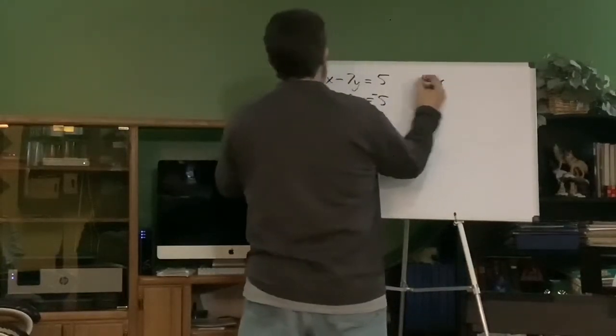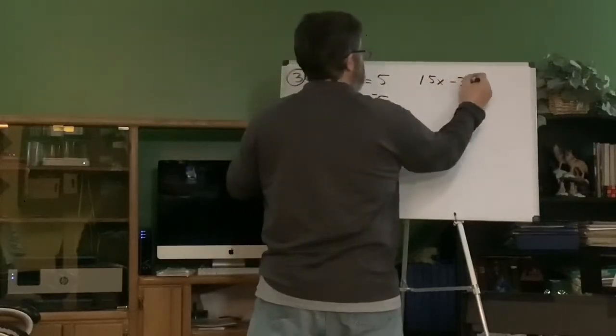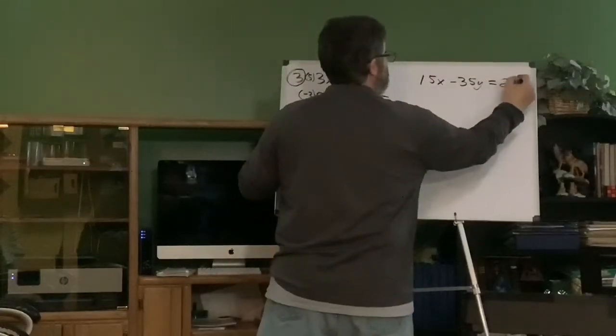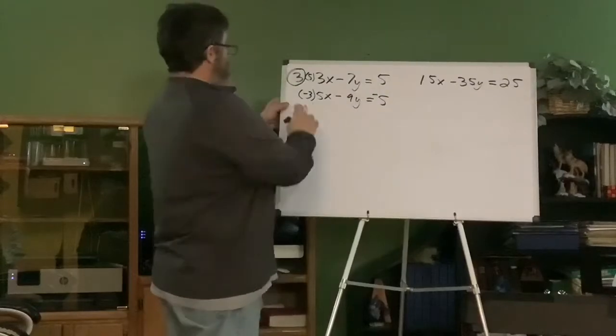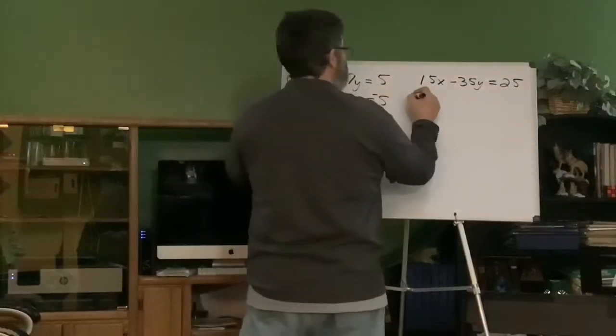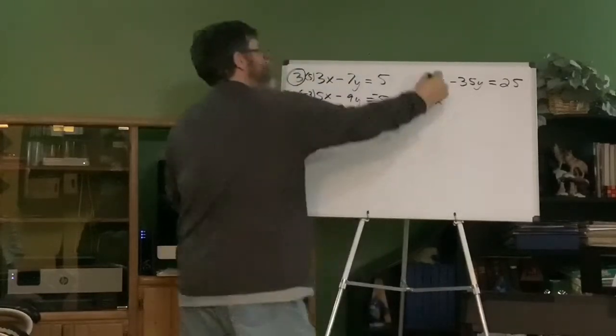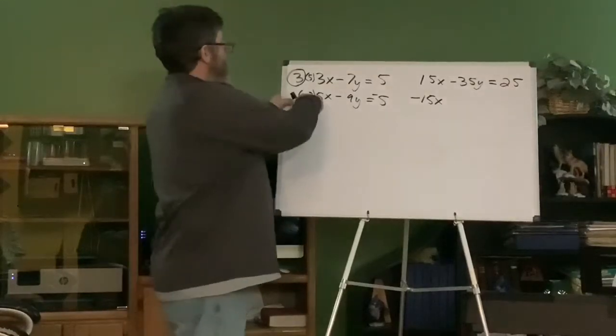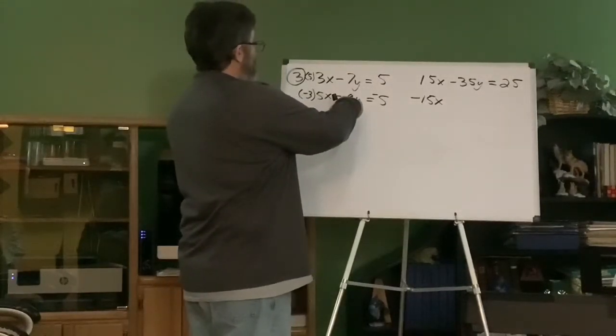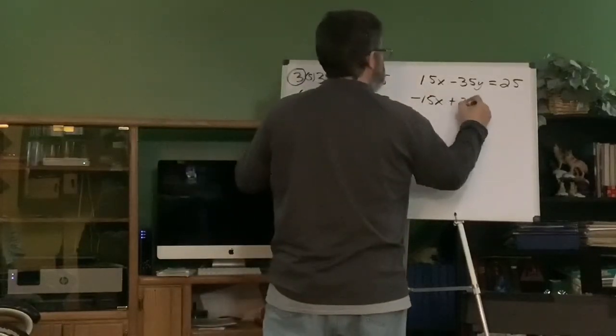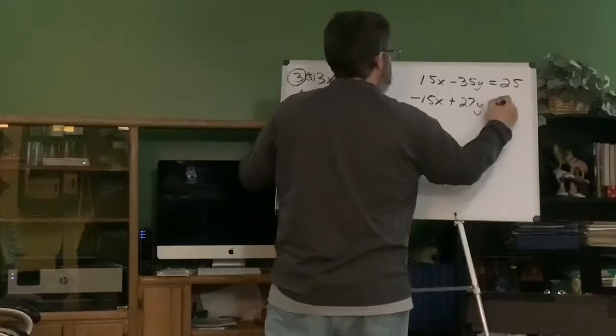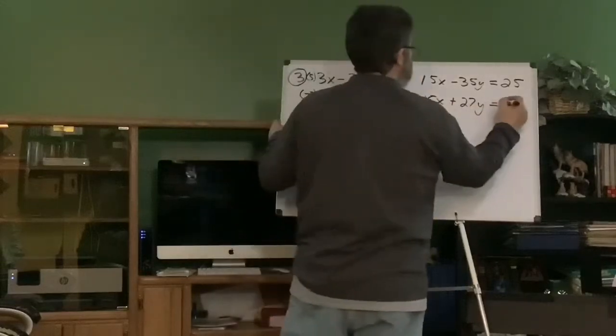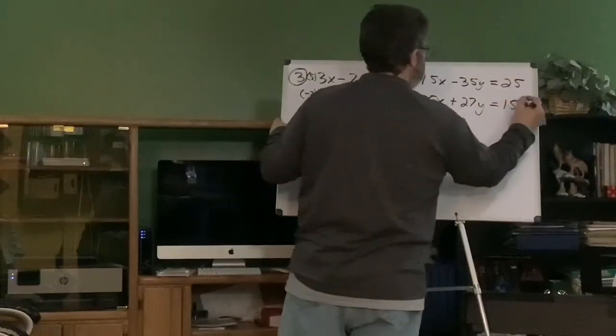Fifteen x. Five times negative seven is a negative 35 y equals five times five is 25. Okay. Negative three times five x is a negative 15 x. There it is. Okay. Same coefficient, opposite signs. That's what we're looking for. Okay. Negative three times a negative nine is a positive 27 y equals negative three times a negative five is a positive 15. Sorry. Positive 15. Negative times negative is a positive. There it is.